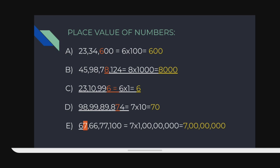Last example: 7 is in the place of 1 crore. 7 into 1 crore = 7 crore. So 7 crore is the place value of 7.